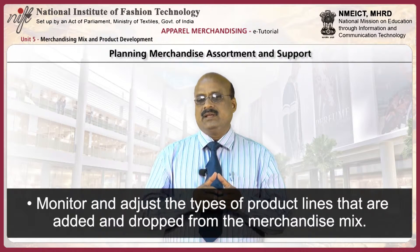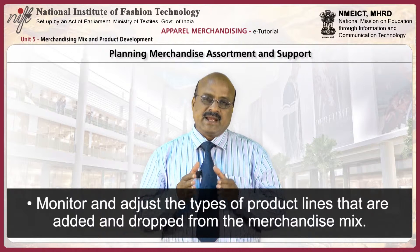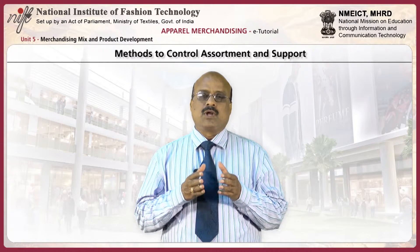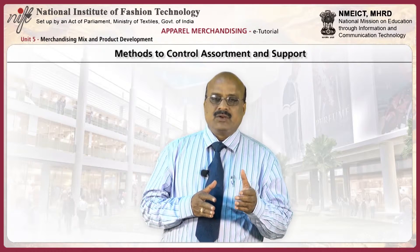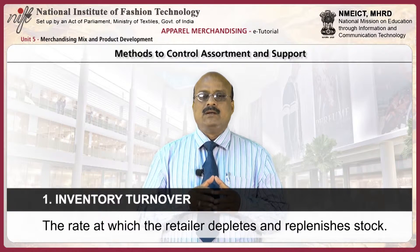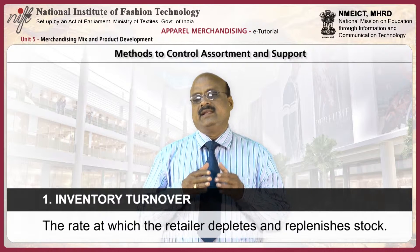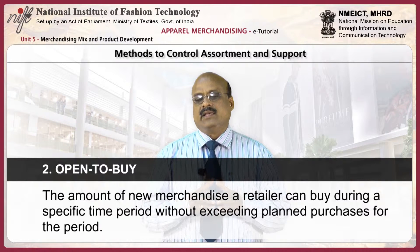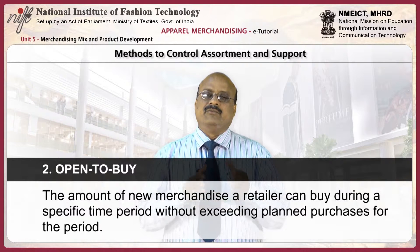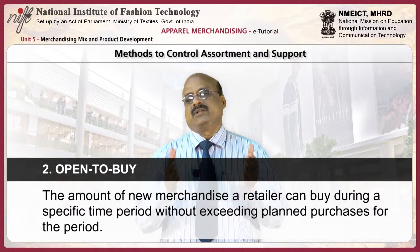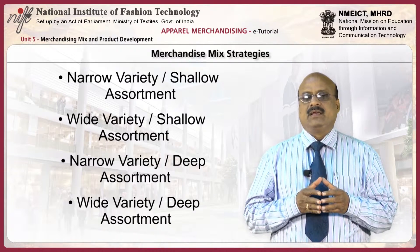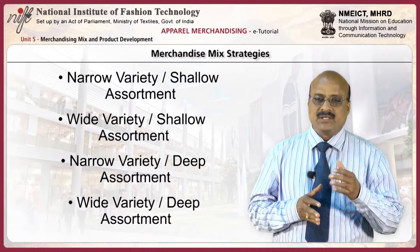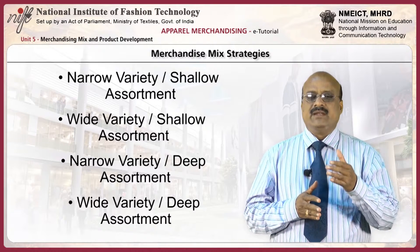This involves monitoring and adjusting the types of product lines that are added and dropped from the merchandise mix. Two widely used methods to control assortment and support are inventory turnover and open to buy. Inventory turnover is the rate at which the retailer depletes and replenishes the stock. Open to buy is the amount of new merchandise a retailer can buy during a specific time period without exceeding the planned purchases for the period. Direct optimal variety and assortment strategy options include narrow and shallow assortment, wide and shallow assortment, narrow and deep assortment, and wide and deep assortments.